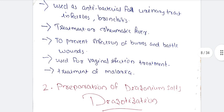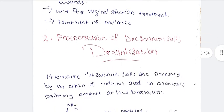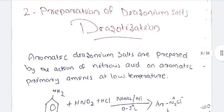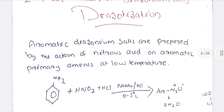The important applications of sulfa drugs: they are used as antibacterial agents for urinary tract infections, bronchitis, treatment of rheumatic fever — which is also used for burns and wounds — and treatment of malaria.